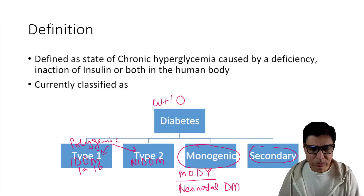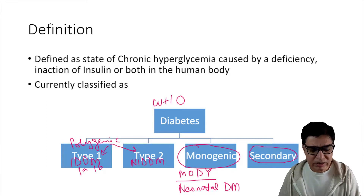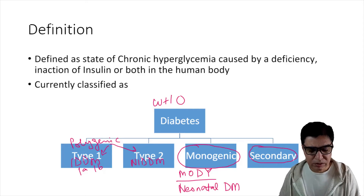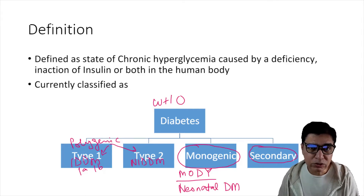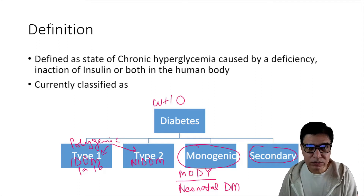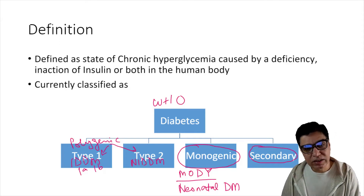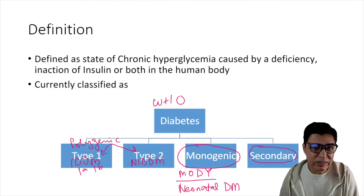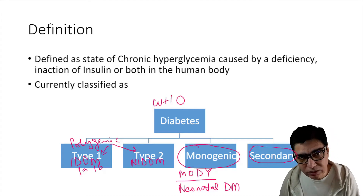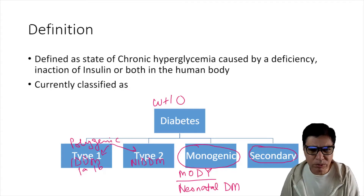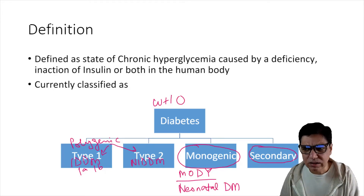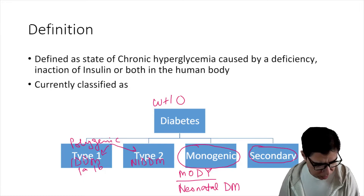So to summarize the classification: we have Type 1, Type 2, monogenic diabetes — which includes maturity onset diabetes of the young and neonatal diabetes — and secondary diabetes, where problems include Cushing's syndrome, hemochromatosis, and diabetes secondary to drugs.